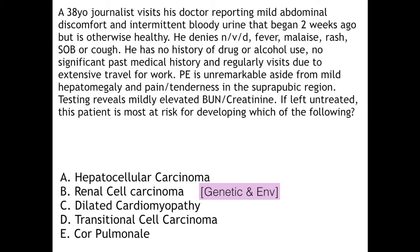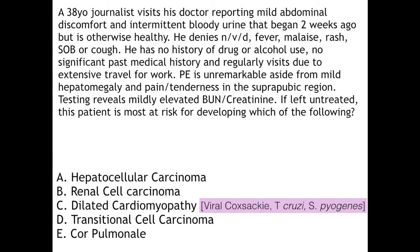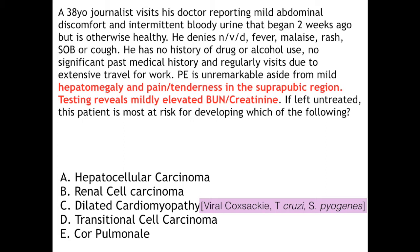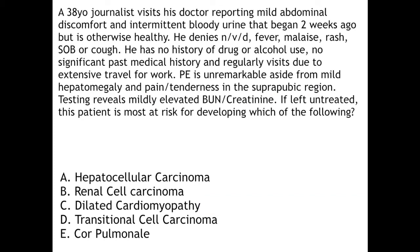Option B is another great distractor: although the bladder fluke can cause hydronephrosis and chronic renal failure, it's not associated with renal cell carcinoma, which has no known infectious causes. The major association for RCC is genetic and environmental, number one being von Hippel-Lindau disease. Option C, dilated cardiomyopathy, has infectious causes including viral Coxsackie B, parasitic Trypanosoma cruzi causing Chagas disease, and Strep pyogenes causing dilated cardiomyopathy as a complication of rheumatic fever — but none of these would cause bloody urine or hepatomegaly. Option E, cor pulmonale, is associated with the lung fluke Paragonimus westermani and is incorrect as it would not cause bloody urine or hepatomegaly, and cough or shortness of breath were denied by this patient.